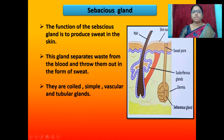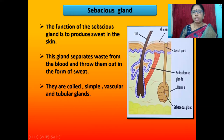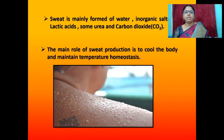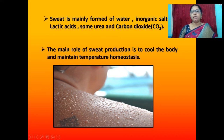The function of the sebaceous gland is to produce sweat in the skin. This gland separates waste from the blood and expels it in the form of sweat. They are coiled, simple, vascular and tubular glands. Sweat is mainly formed of water, inorganic salts, lactic acids, some urea and carbon dioxide.